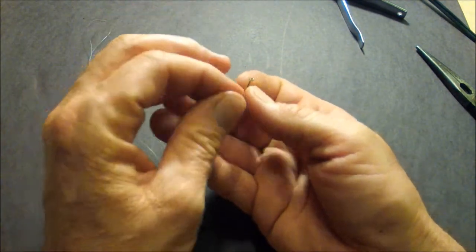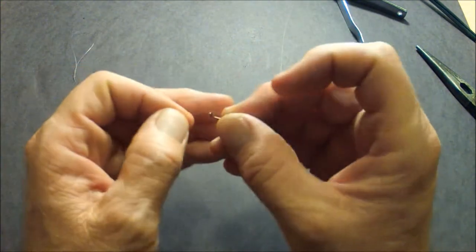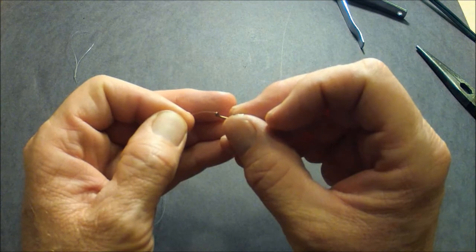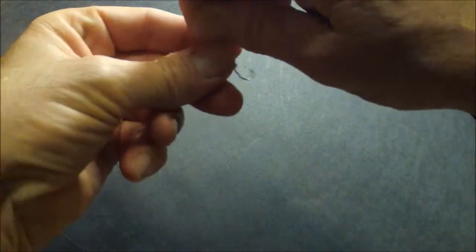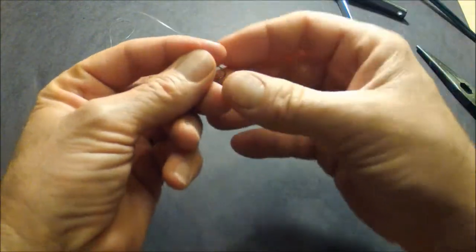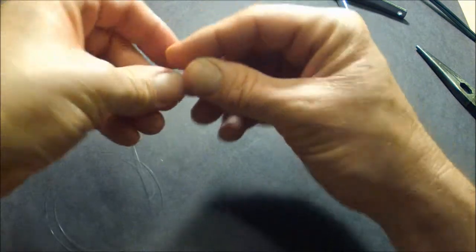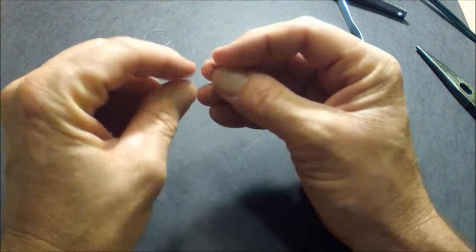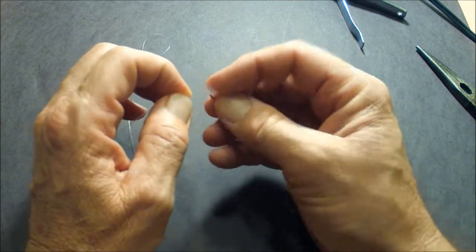So here we go. We're going to take the end of the fishing line and we're going to run it through the eyelet of the hook like so. I'm going to grab the end of the fishing line, give ourselves a couple inches or so, and we're going to fold it back like that. We're going to do the same thing that we did on our other video with the treble hook. We're going to spin this at least seven times.